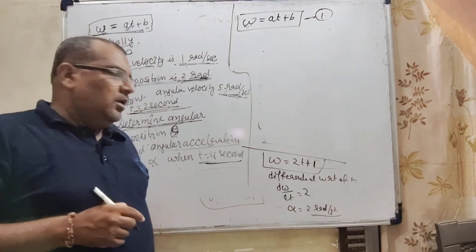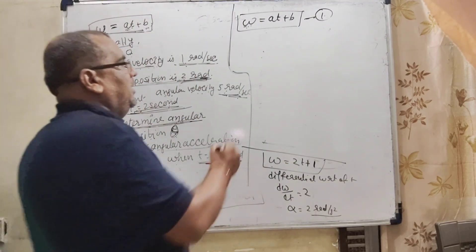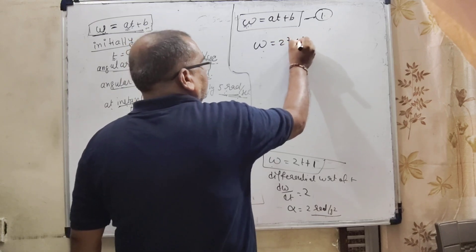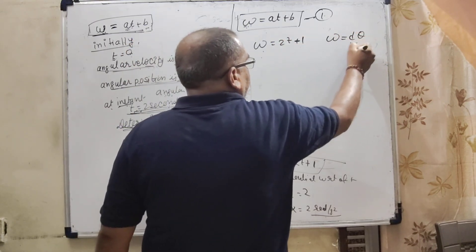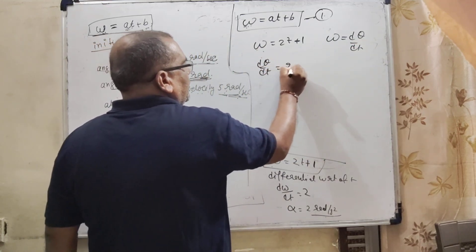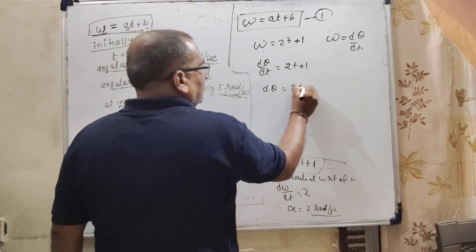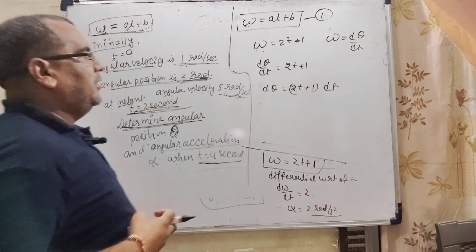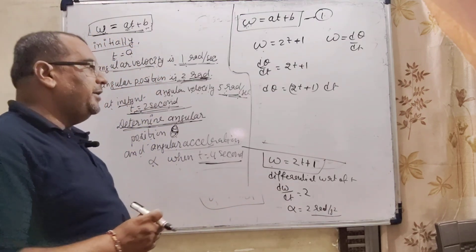Now for the calculation of angular position. Again, omega equals 2t plus 1. As we know that angular velocity is d theta by dt. So substitute this value: d theta by dt is equal to 2t plus 1. d theta is equal to 2t plus 1 into dt. Which means we have to find out position, angular position by integrating both the sides.